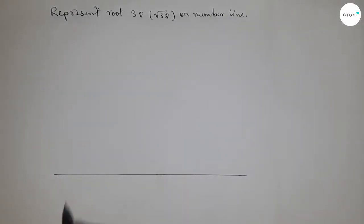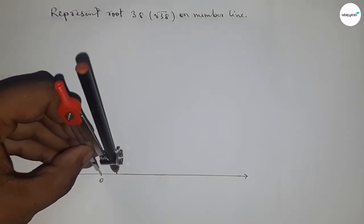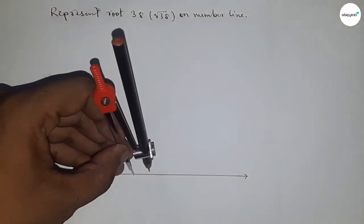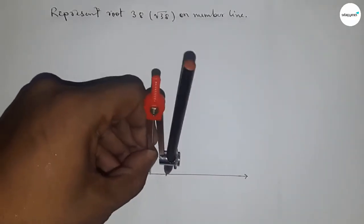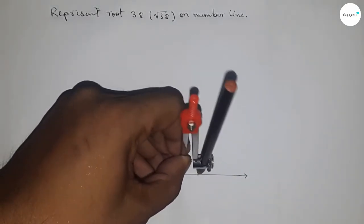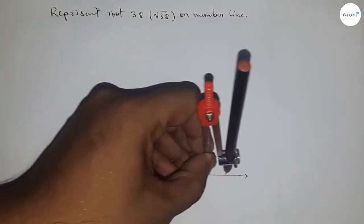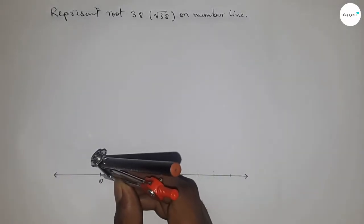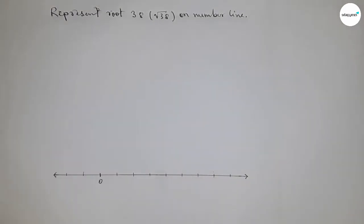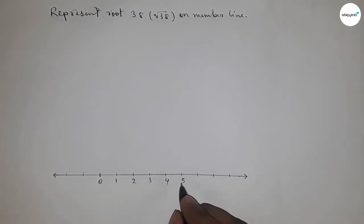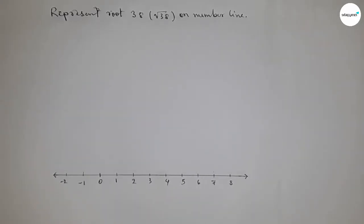First, draw a line of any length and mark the ends with arrows, taking zero as the starting point. Using a compass, take any unit length to mark numbers on the line. This length is called unit length or one unit. Mark 1, 2, 3, 4, 5, 6, 7, 8, and so on, and on the other side minus 1, minus 2, and so on.